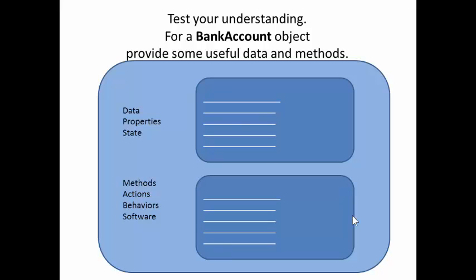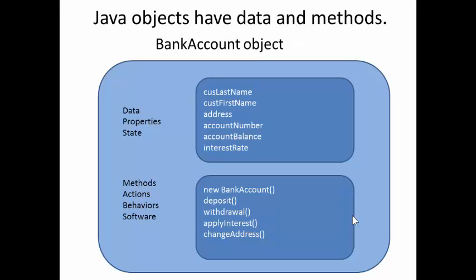Here are some that I came up with. For example, a bank account object would have a customer's name, last and first, his address. Bank account objects tend to have account numbers. A bank account would have a balance, the amount of money in the account. It might have an interest rate.